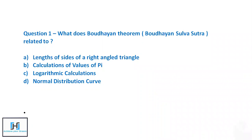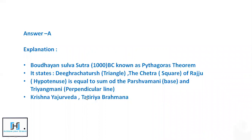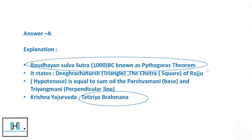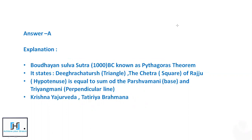Question 1: What is Baudhayan theorem — Baudhayan Sulva Sutra — related to? Options are: the length of sides of a right angle triangle, calculations of values of pi, logarithmic calculations, or normal distribution curve. The correct answer is that Baudhayan theorem is essentially the Pythagoras theorem, mentioned in the Krishna Yajurveda's Taittiriya Brahmana, written around 1000 BC. So Baudhayan Sulva Sutra, found in the Krishna Yajurveda, tells us the Pythagoras theorem in ancient times.